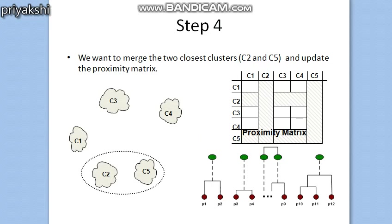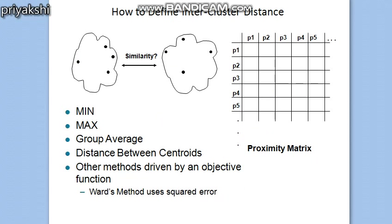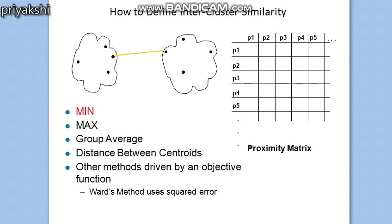So C2 and C5 are merged, and again you update the proximity matrix. The question is: how do we update the proximity matrix? There are various ways — the proximity matrix can be updated using mean (min), max, group average, distance between centroids, or other methods driven by an objective function such as Ward's method using squared error.